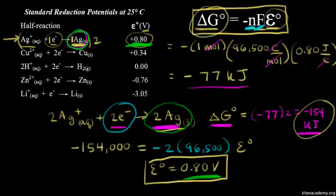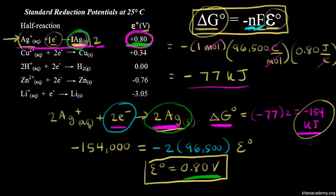It's important to remember this when working with standard reduction potentials. If you need to multiply a half reaction by two, you do not multiply the voltage by two, because voltage is an intensive property.